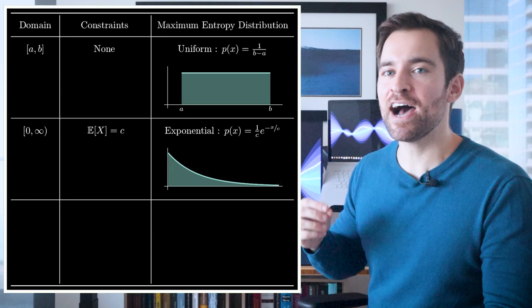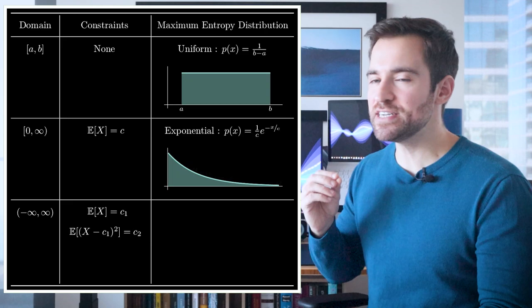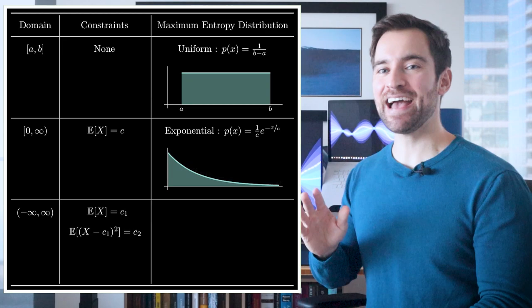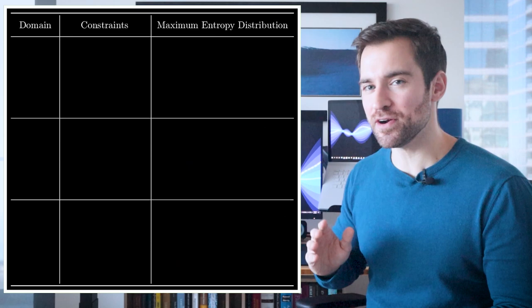Let's push it. Let's say the domain is the entire real line, and you know the average is some value. And also, the average square difference from that average is some other value. Well, you guessed it. In that case, you get the normal, another famous distribution.